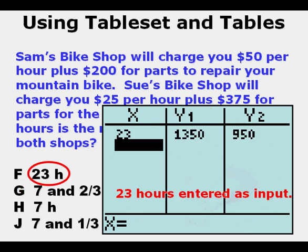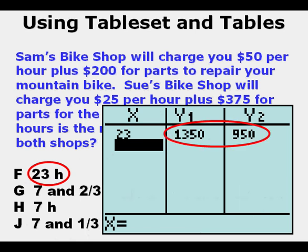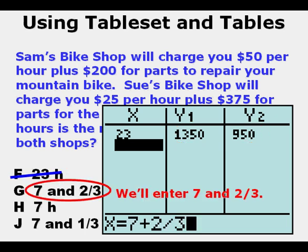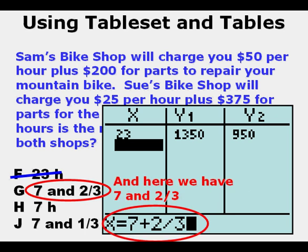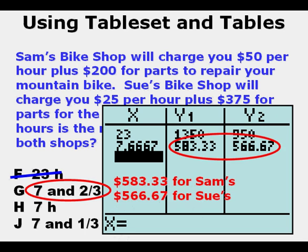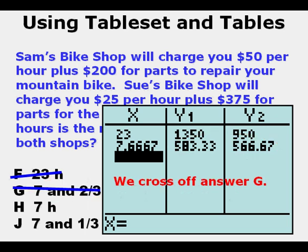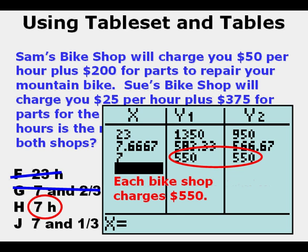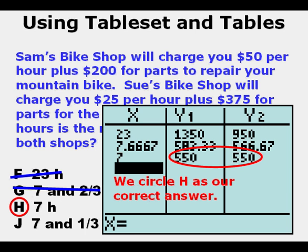Here is 23 hours entered as an input value. For an input of 23 hours, Sam's Bike Shop charges $1,350 and Sue's Bike Shop charges $950. Since the amounts are not the same, we cross off answer F. Next we'll enter answer choice G, 7 and 2 thirds — entered as 7 plus 2 over 3. We see $583.33 for Sam's and $566.67 for Sue's — a lot closer, but still not equal, so we cross off answer G. Now we'll enter 7 for answer H. We see that for 7 hours each Bike Shop charges $550, meaning the charges are equal. So we circle H as our correct answer.